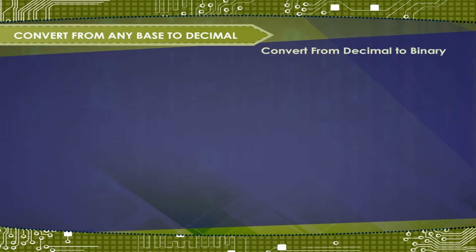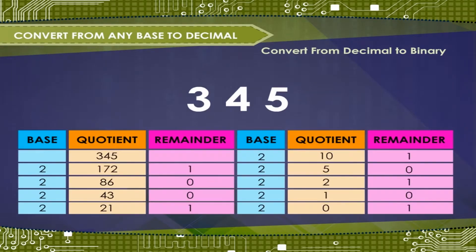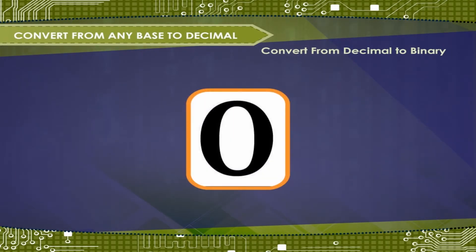Convert from decimal to binary. Now try converting the decimal number 345 into binary notation. Note that the desired base is 2, so you have to repeatedly divide the given decimal number by 2. Stop when the quotient is 0. Write the remainders in reverse order, as shown, representing the decimal notation.